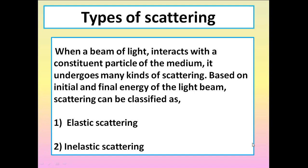Let me explain the types of scattering. Depending on the initial and final energy of the light beam, scattering can be classified into two categories: elastic scattering and inelastic scattering. When a beam of light interacts with the constituent particles of the medium, it undergoes many kinds of scattering. We have to take into account the initial and final energy of the light beam.